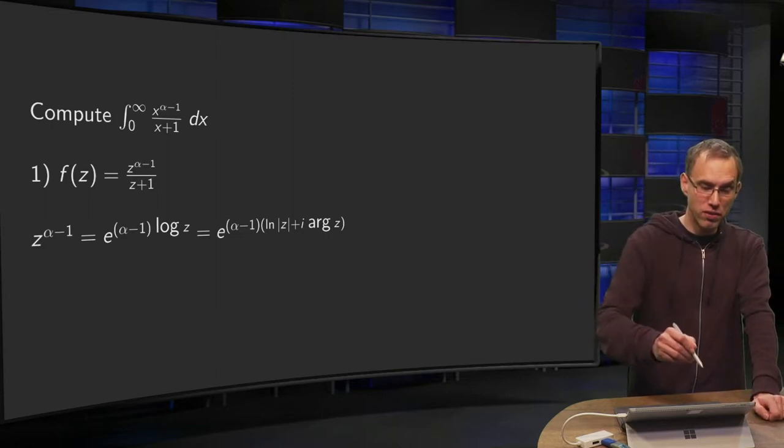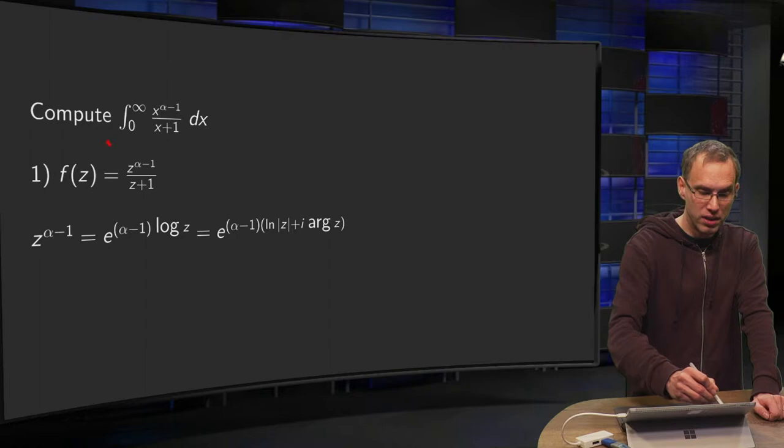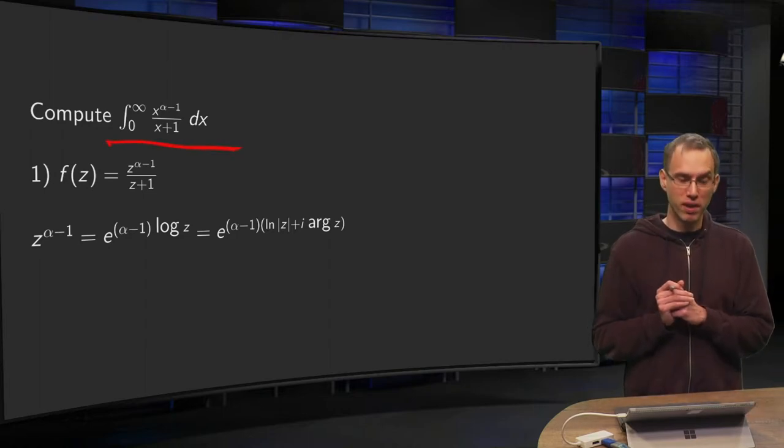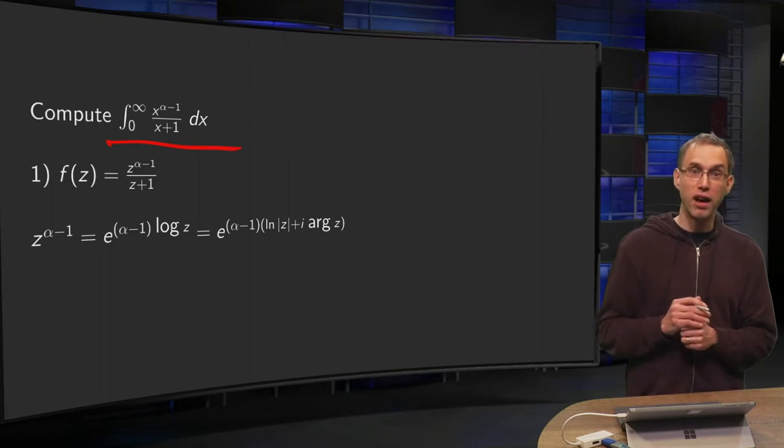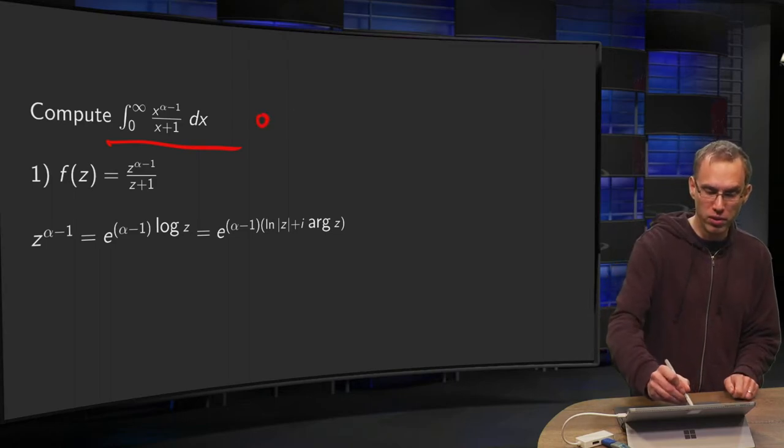In this case we have to integrate this function x to the power alpha minus 1 over x plus 1, where alpha is between 0 and 1.